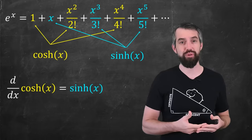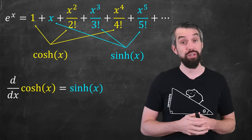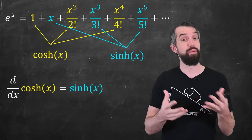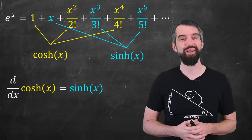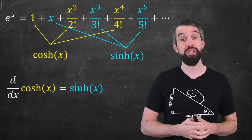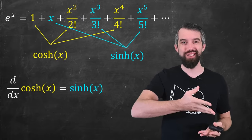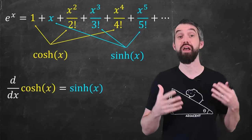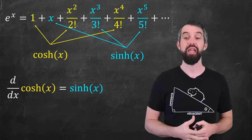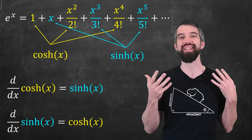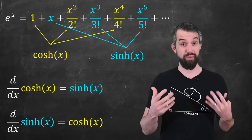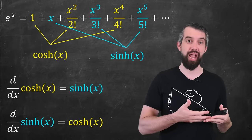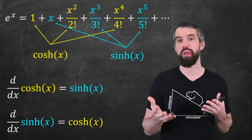Using either the series representation or the original definition, you can check relationships like: the derivative of hyperbolic cosine is just hyperbolic sine. Indeed, for every term when you take a derivative, it brings the power down and cancels one of the factorial terms, giving exactly hyperbolic sine. Similarly, the derivative of hyperbolic sine is hyperbolic cosine. Except for a missing minus sign, this is very similar to the derivative relationship between regular sine and cosine.